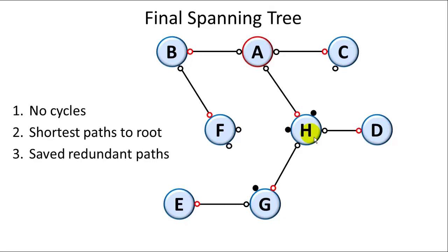Each switch has the shortest path to the root, and we've saved the redundant paths so that we can easily reopen them if one switch goes down so that we can reestablish a minimum spanning tree.